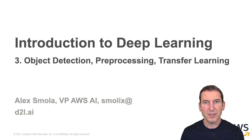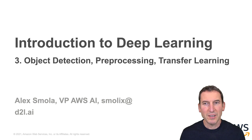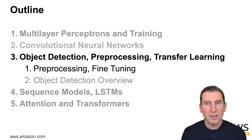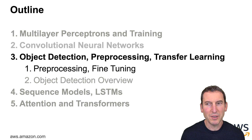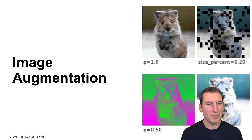Welcome to the section on computer vision. Now that we've looked at how to design basic image processing networks for image classification, let's see what we can actually do with that beyond just deciding whether an image is a cat or not. The first thing we'll do is look a little more into pre-processing, what you can do with different types of fine-tuning, as this is one of the more common use cases when dealing with images. Let's start with pre-processing and image augmentation.